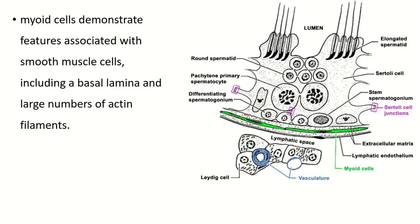This outermost layer of the seminiferous tubule is known as the tunica propria, which contains myoid cells. The myoid cells are smooth muscle-like cells which contain actin filaments, so they are able to contract. This helps the movement of the spermatogenic cells through the lumen of the seminiferous tubule.